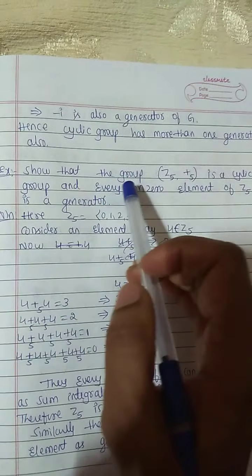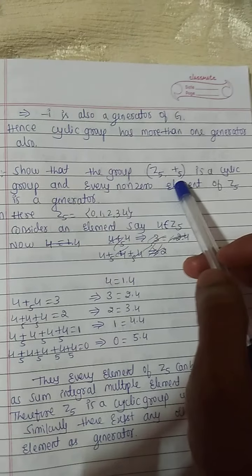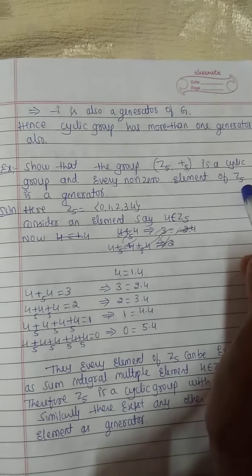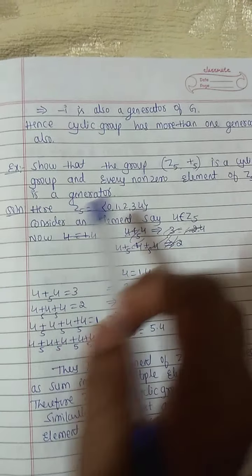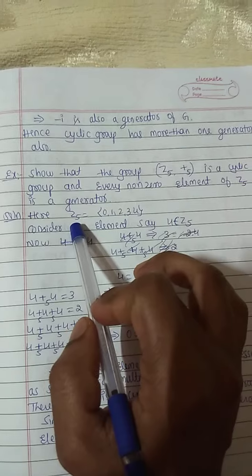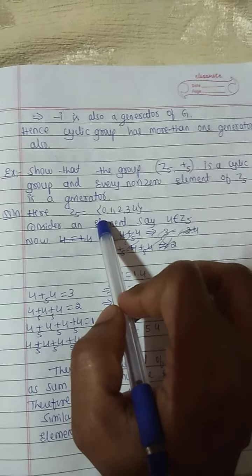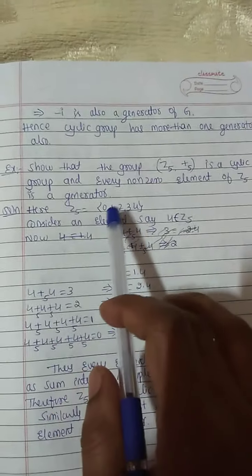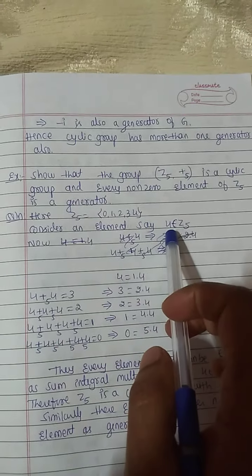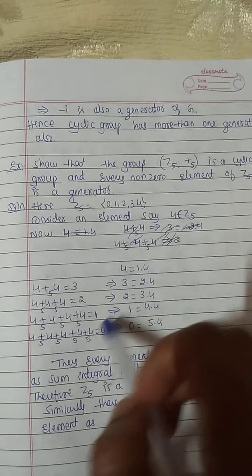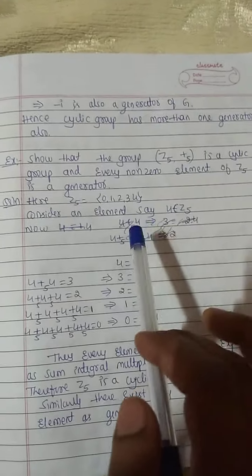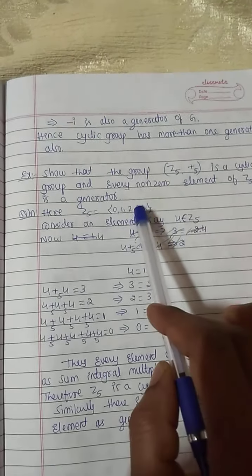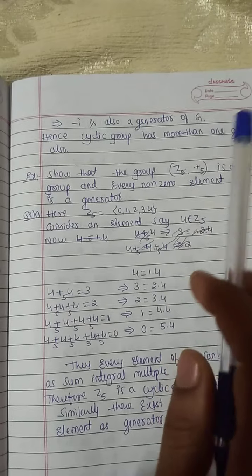Next example: Show that the group Z5 under addition mod 5 is a cyclic group and every non-zero element of Z5 is a generator. We already know that Z5 equals {0, 1, 2, 3, 4}. Take any one element, for example take 4, which belongs to Z5. If 4 generates all these elements, then 4 is a generator of this group and Z5 is a cyclic group.